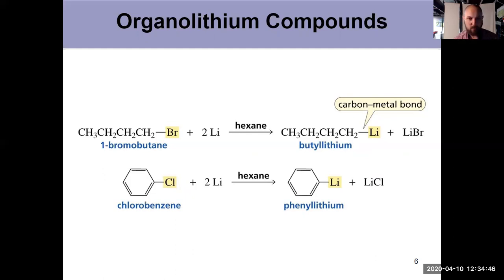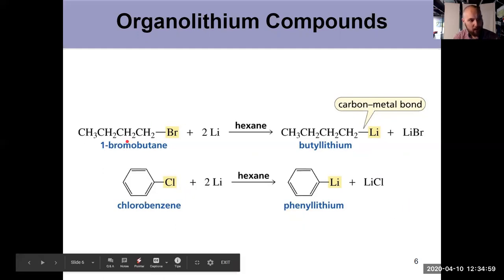You can use bromine, you can use chlorine. Alkyl bromides are the most common alkyl halide to use for preparing organolithium and organomagnesium compounds because they react more readily. Alkyl halide, lithium, non-polar solvent - you're in business.